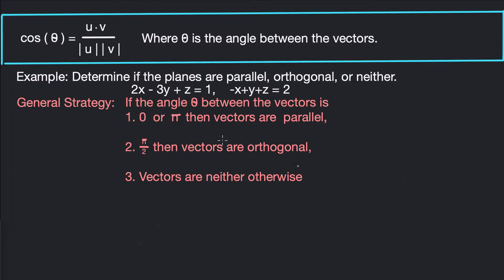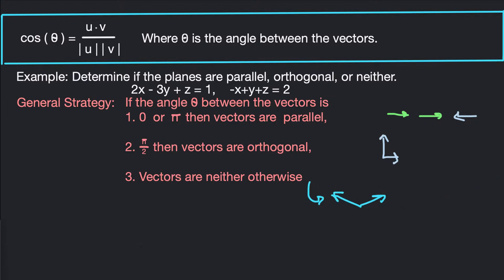If the angle between your vectors is zero or pi, then your planes are parallel — either the vectors point exactly in the same direction (angle of zero) or exactly in the opposite direction (angle of pi). If the angle between the vectors is pi over 2, then you've got orthogonal vectors. If neither of those conditions hold, then the planes are neither parallel nor orthogonal.